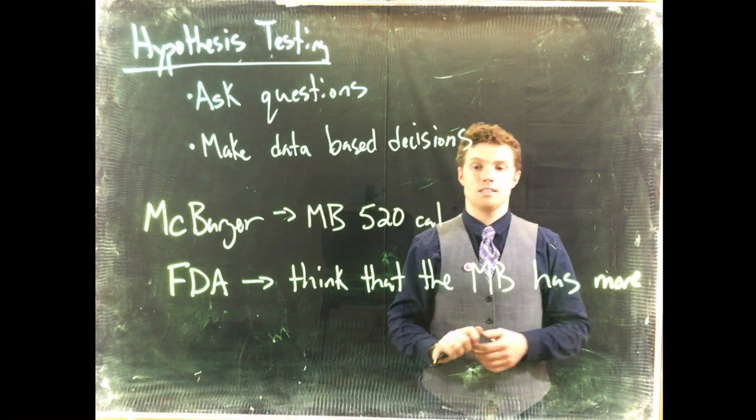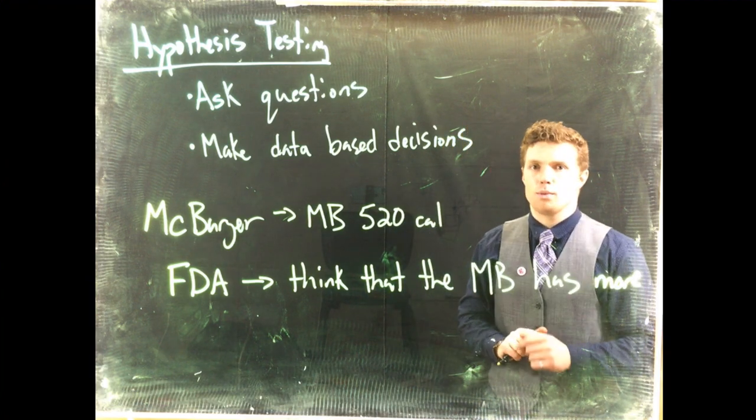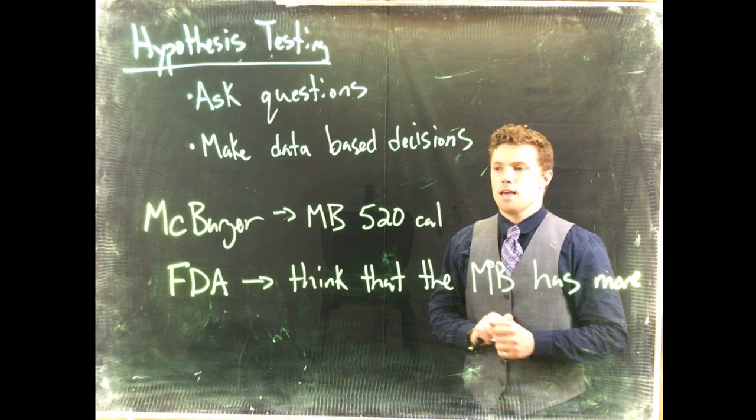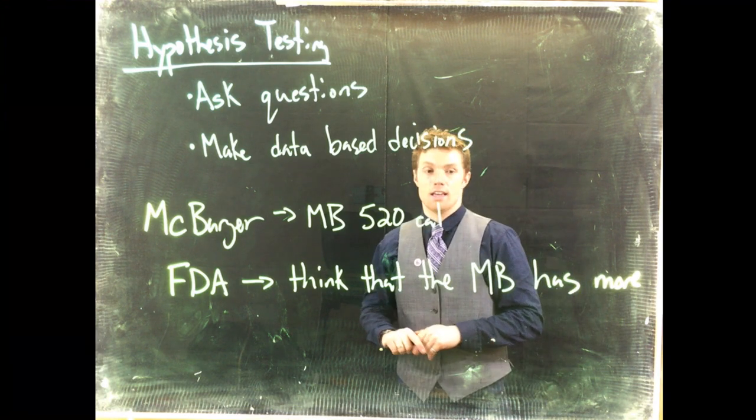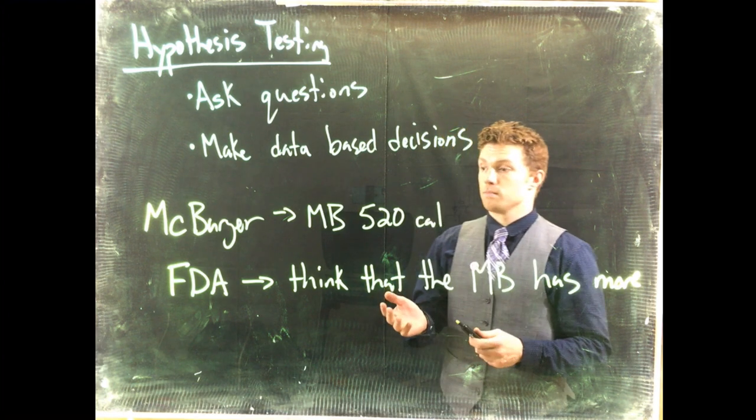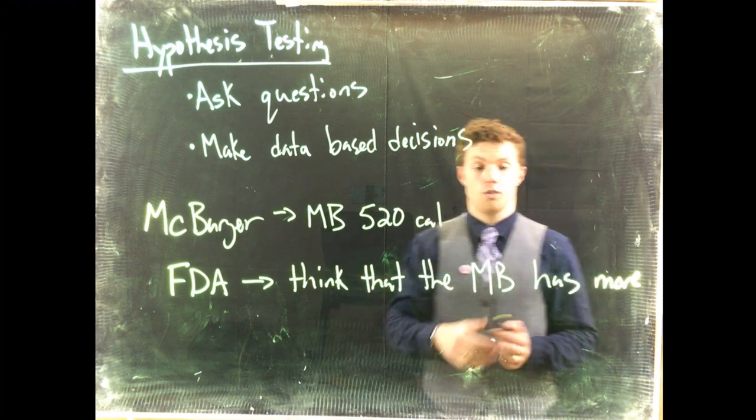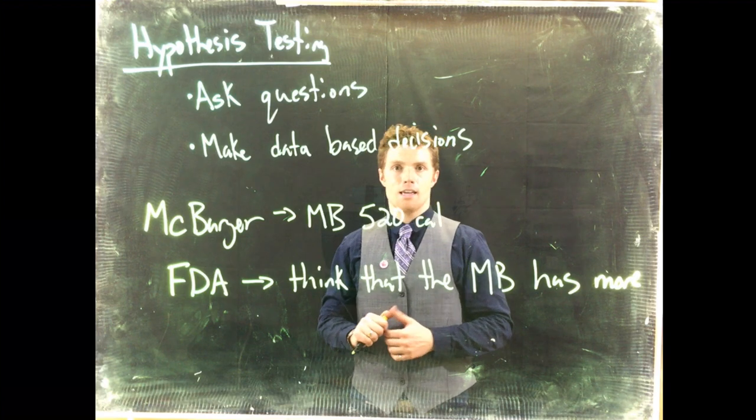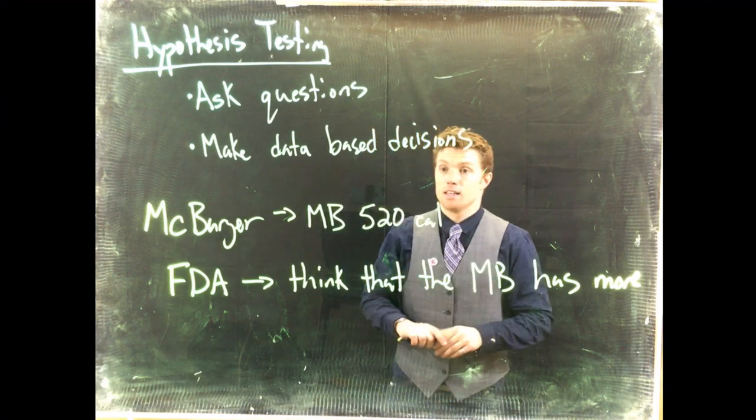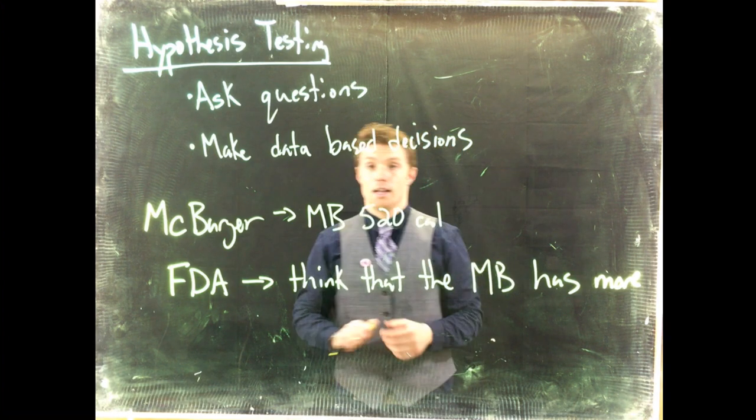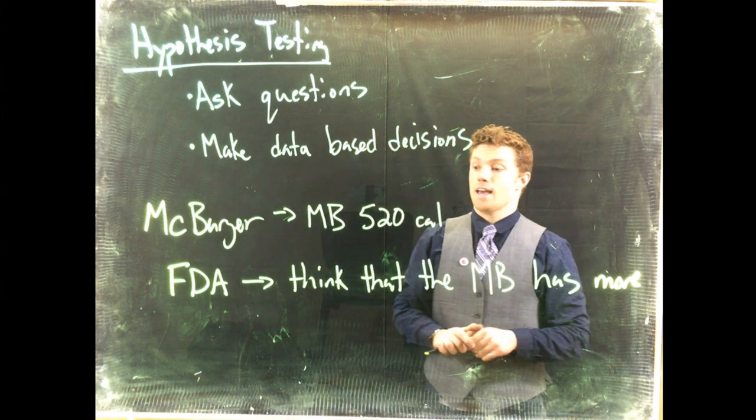They can make some hypotheses, they can set the level at which they want to be certain, and then they can do a test. And then based on their test, they can either say that they have enough evidence to show that McBurger is in fact lying, or that they can't prove that McBurger is telling a lie. So they're just going to go ahead and use what McBurger has stated.